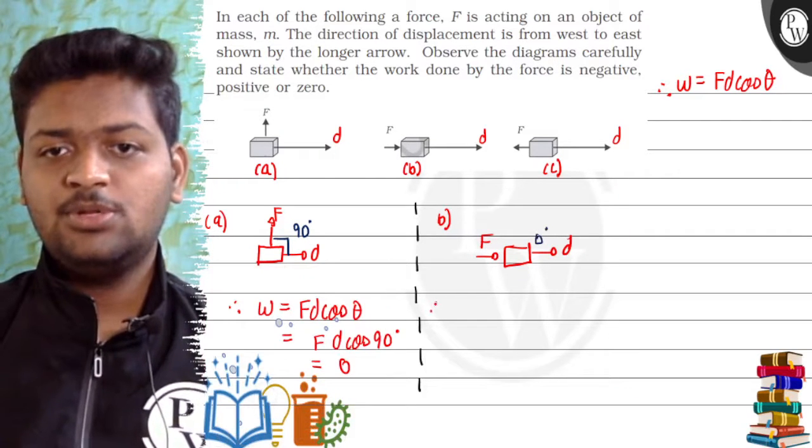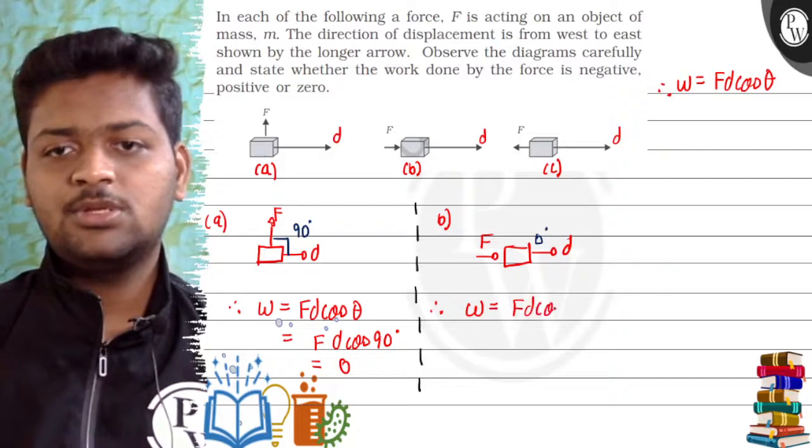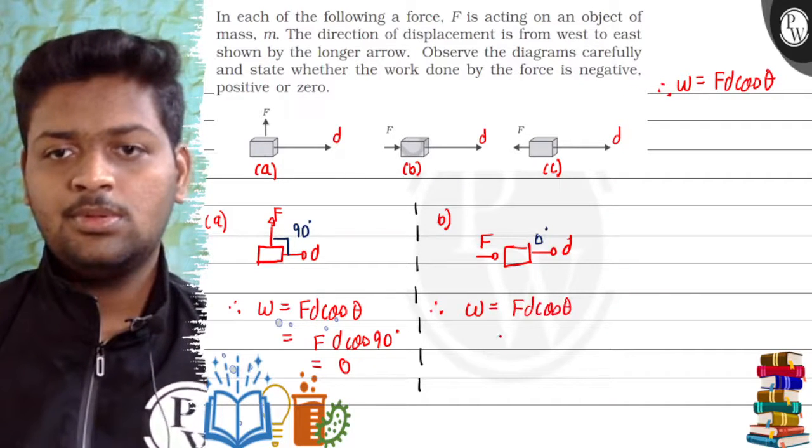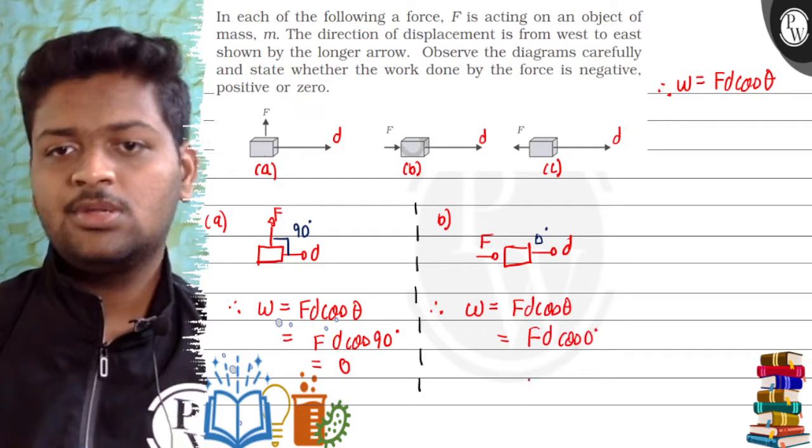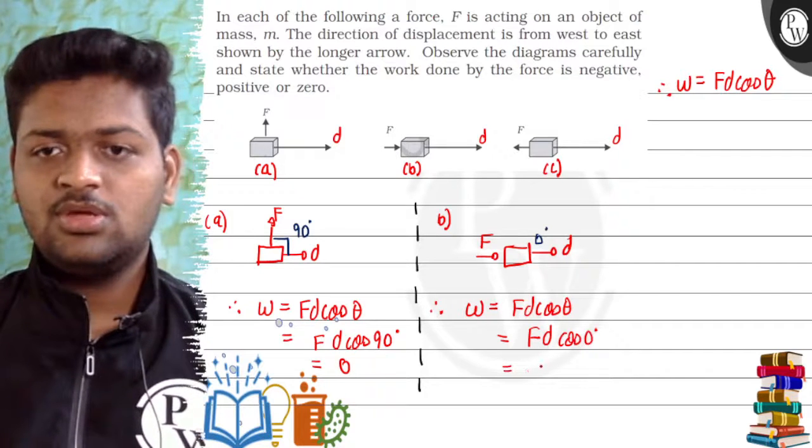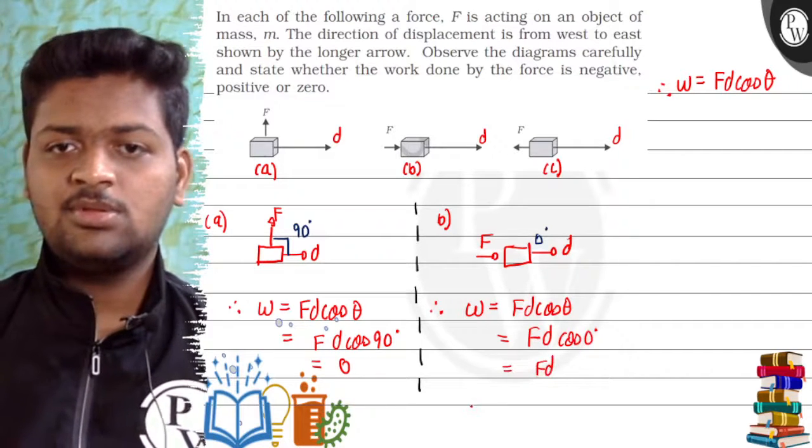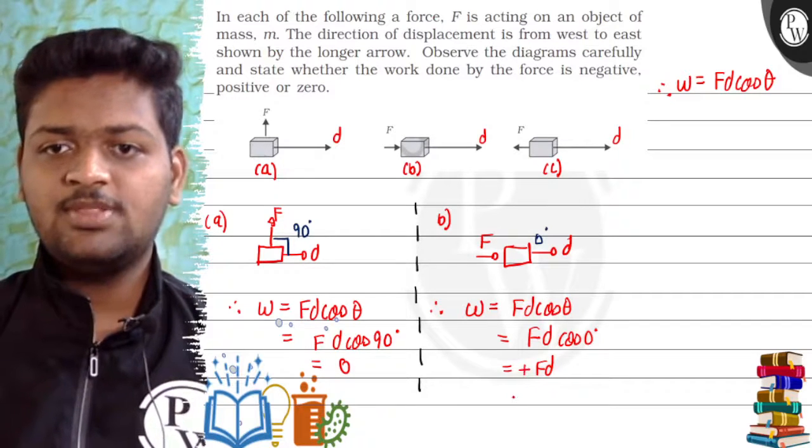We know the formula of work, that is work is equal to Fd cos theta. So it will be Fd cos 0 degrees, that is nothing but 1. So here work done is Fd. So it will be positive. It is plus Fd.